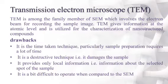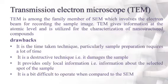Transmission electron microscopy (TEM) is related to SEM and involves an electron beam for recording sample images. TEM gives information at the atomic level and is used for characterization of nanostructured compounds. TEM uses a highly energetic electron beam with an accelerating voltage of approximately 200 kiloelectron volts. TEM is a versatile technique providing information about chemical composition, crystal structure, and images down to a few nanometers. TEM is superior to SEM in terms of high magnification and multi-directional resolution.